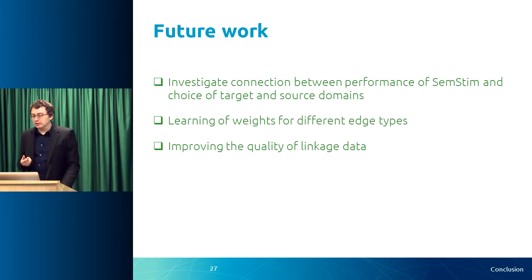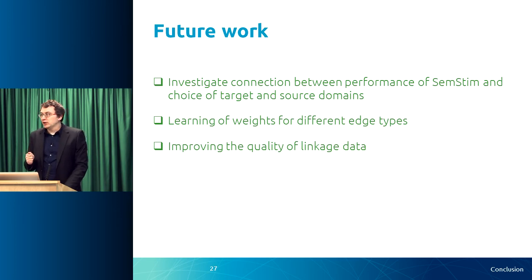Finally, the linkage data can be improved and that might affect the quality of the recommendations. Linkage data is the data that connects an item to DBpedia — for example, linking Harry Potter in your inventory to the Harry Potter URI on DBpedia. In my experiments I used very simple approaches for this linkage. Using more sophisticated approaches such as DBpedia Spotlight might improve recommendation results as well.